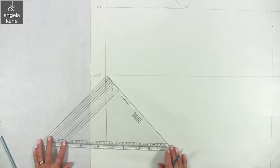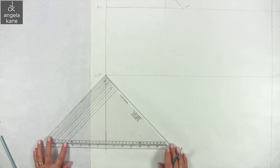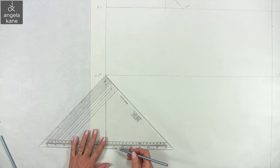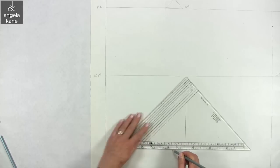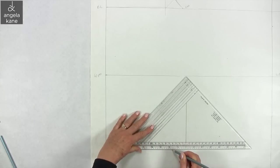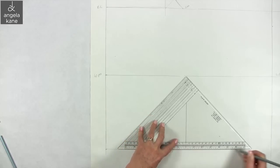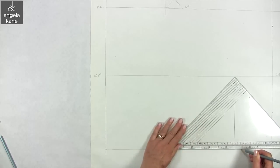Moving down for the hips. Measure down from the waistline 8 to 9 inches depending on where your widest hip measurement is. Take this line across to the center front for the hip line.